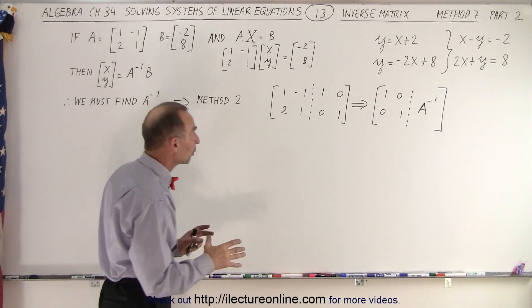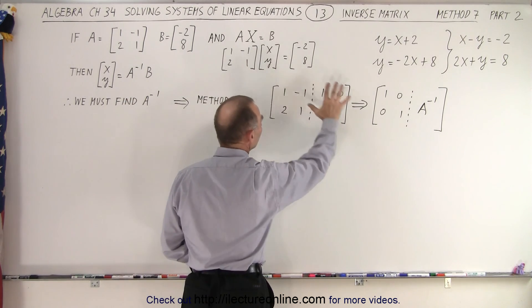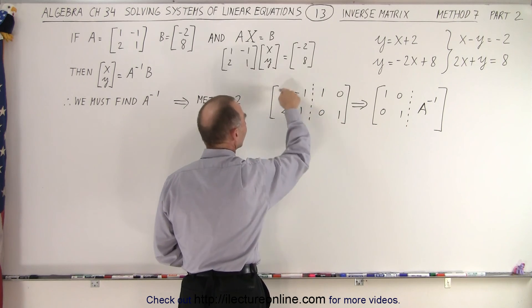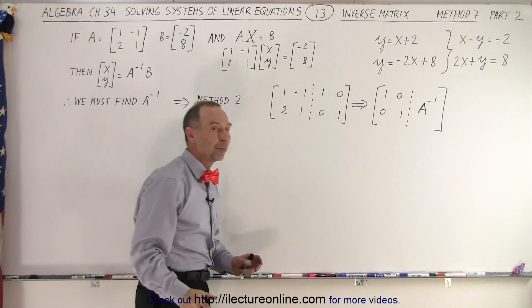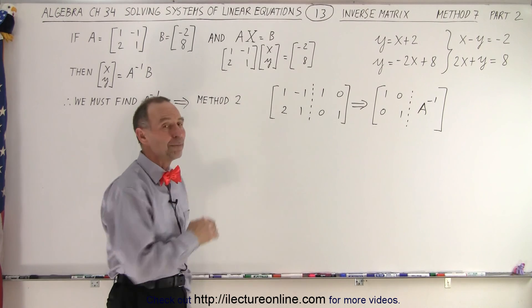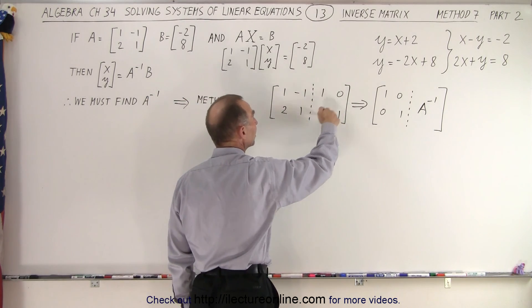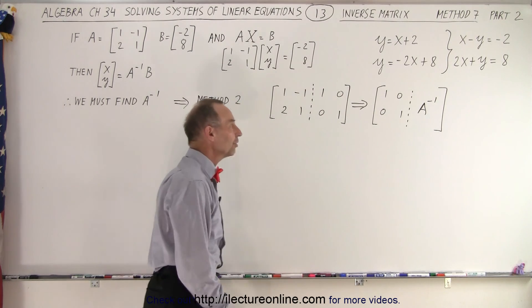And so therefore we start with what we call an adjusted augmented matrix where on the left side we have matrix A and on the right side we have what we call the identity matrix which is ones across the diagonal and zeros everywhere else.